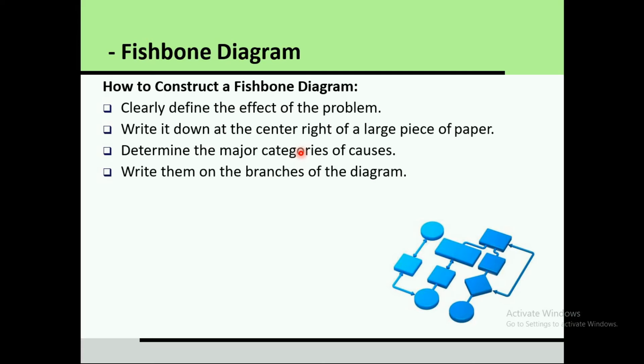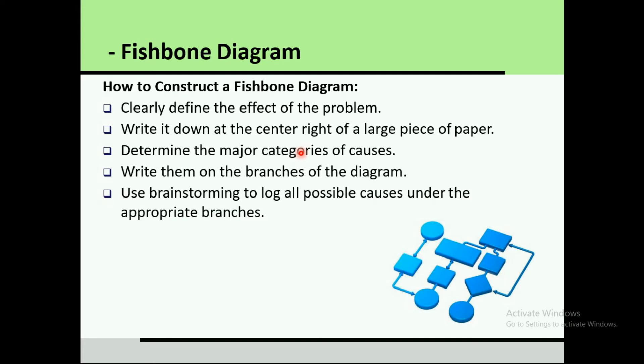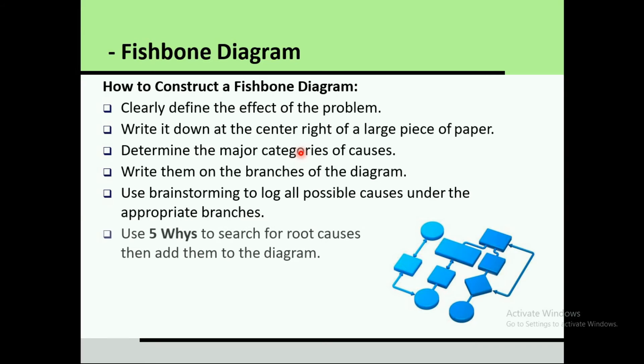Use brainstorming to log all possible causes under the appropriate branches. You need operators, top-level management, and low-level management all involved in the brainstorming sessions to identify causes. In total quality management, 'total' means that everyone should be involved in the system. Then use the Five Whys to search for root causes.